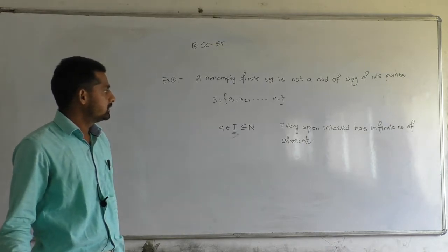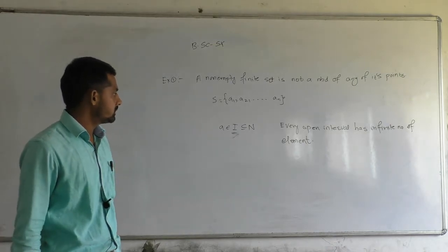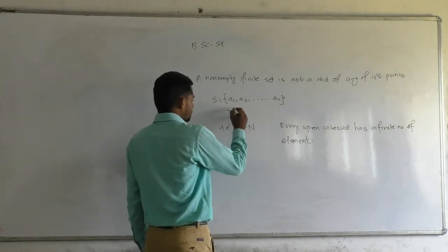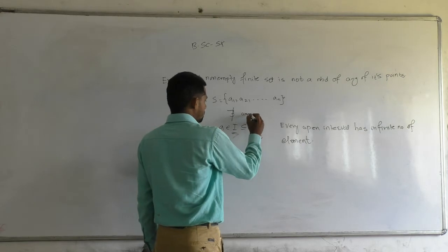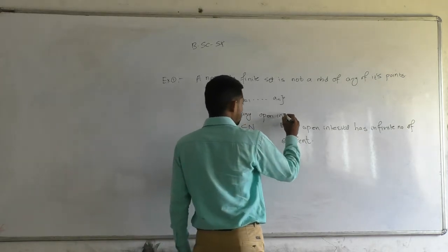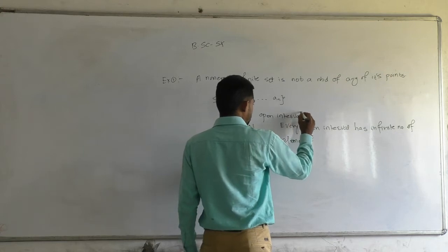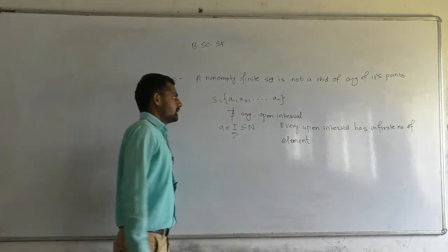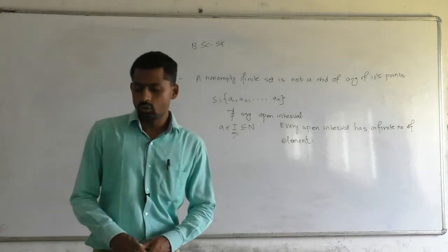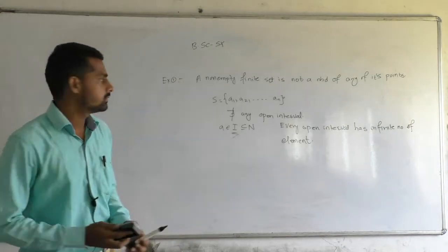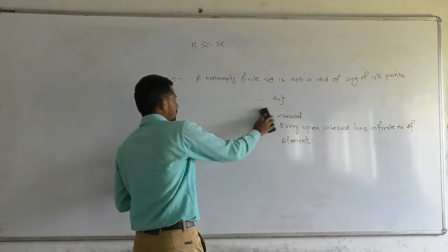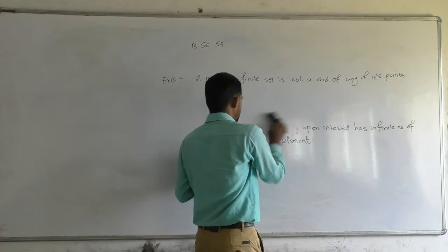Since every open interval has an infinite number of elements, and S is a finite set, no open interval can exist within S. Therefore, a non-empty finite set is not a neighborhood of any of its points, because there does not exist any open interval contained within it.